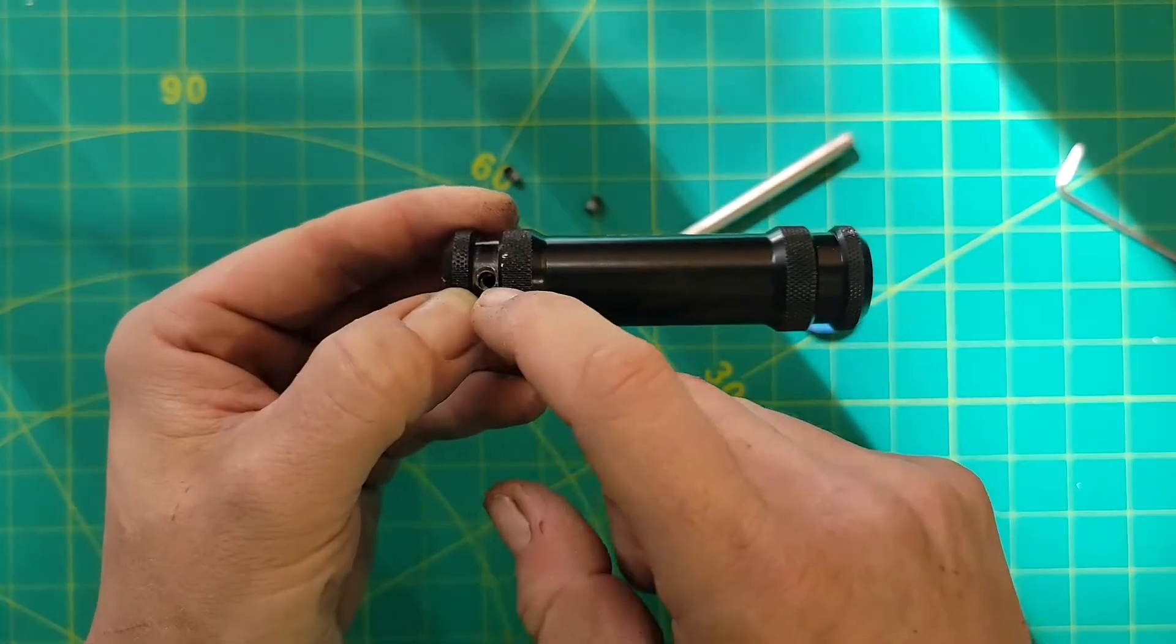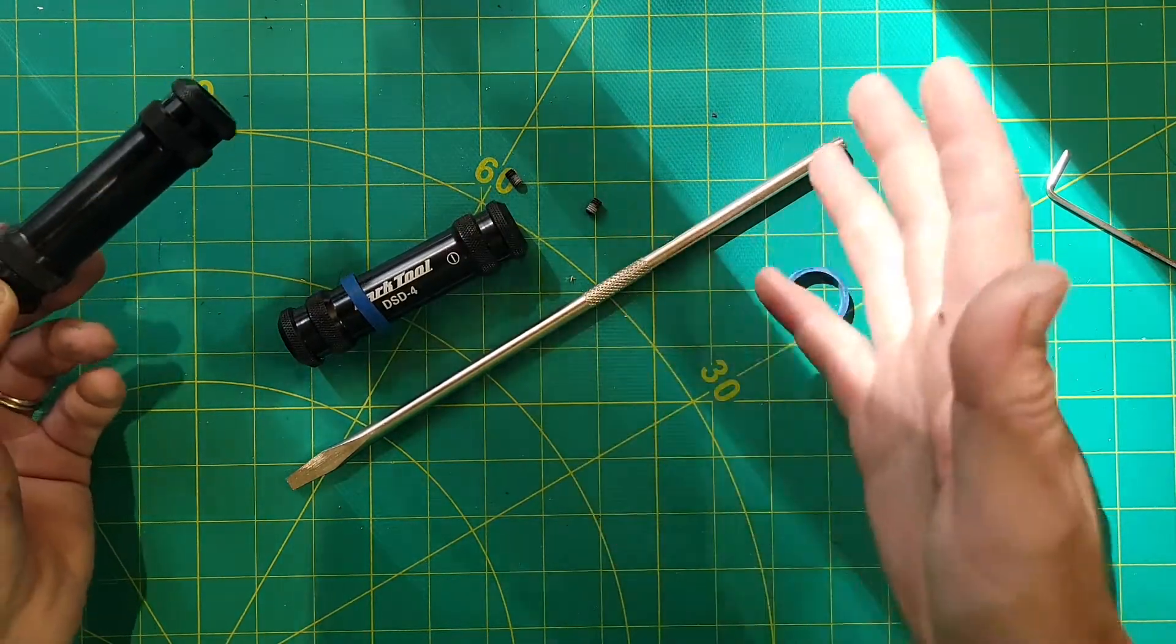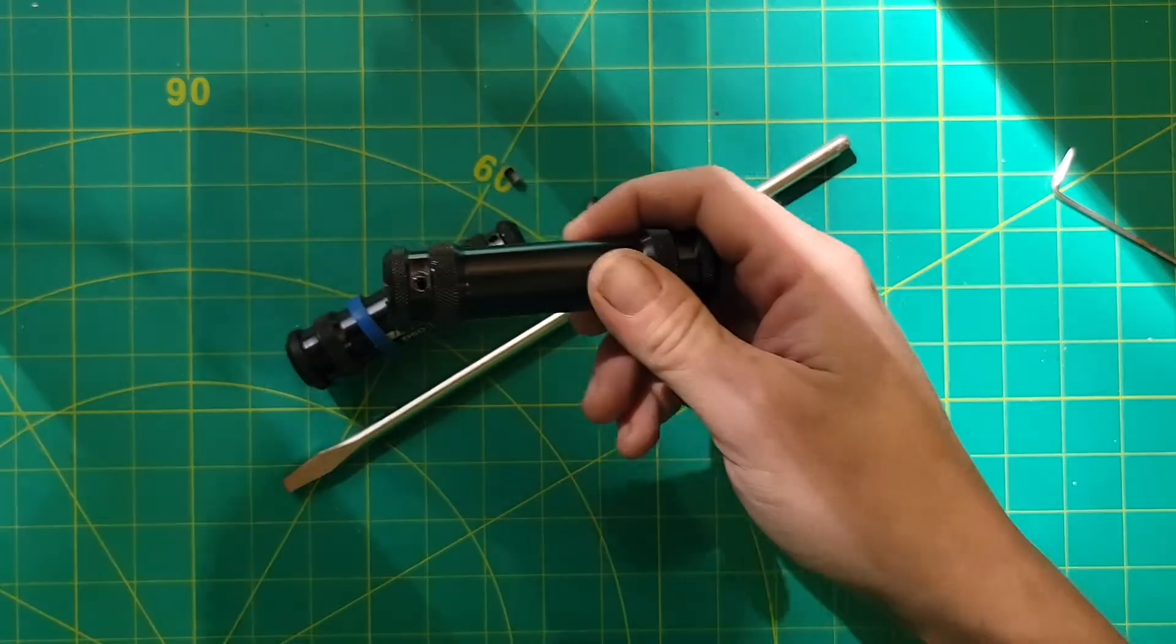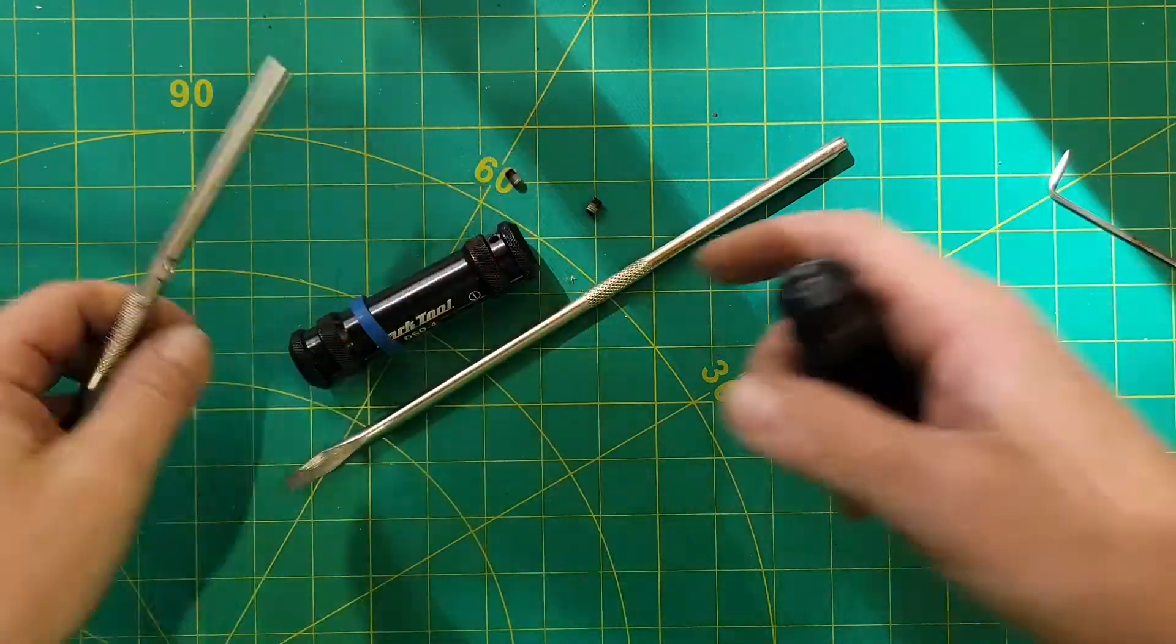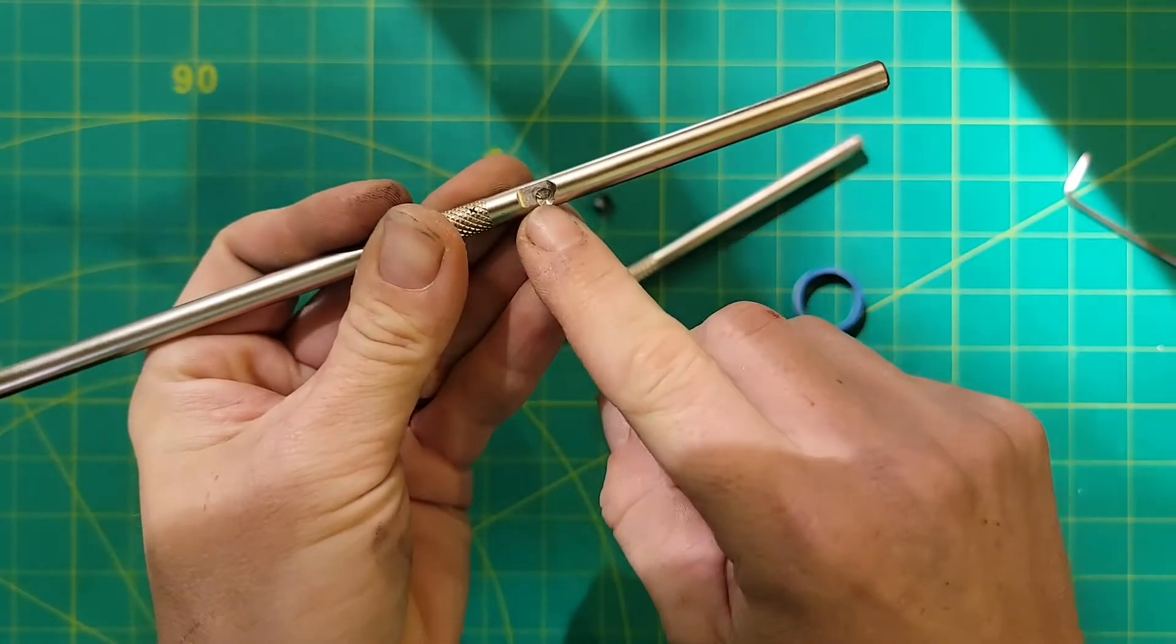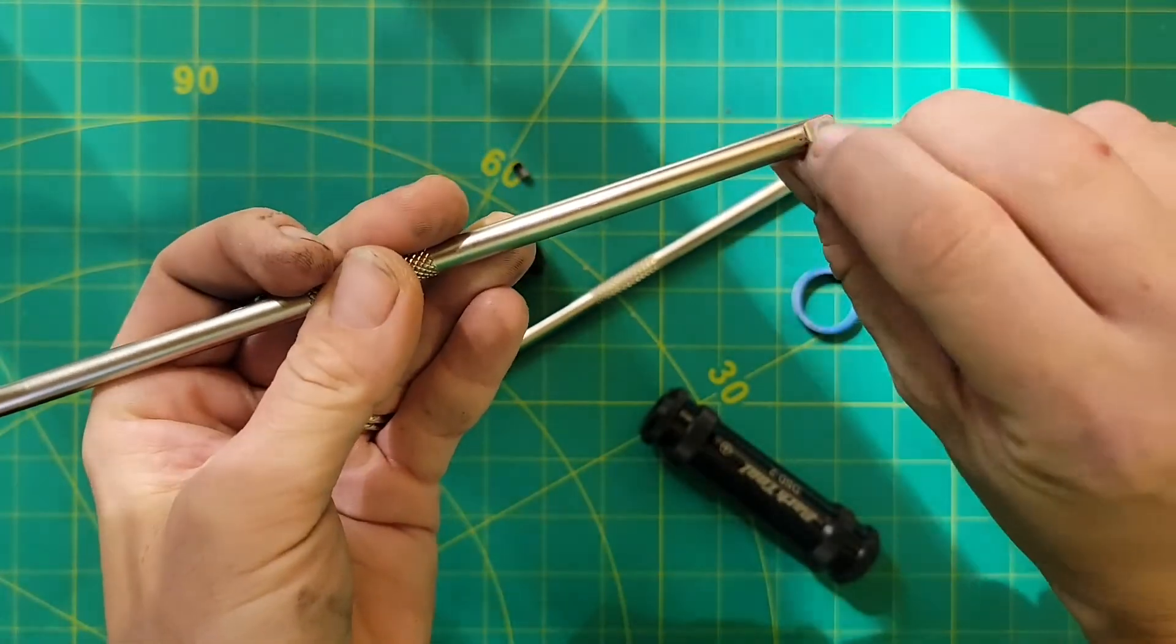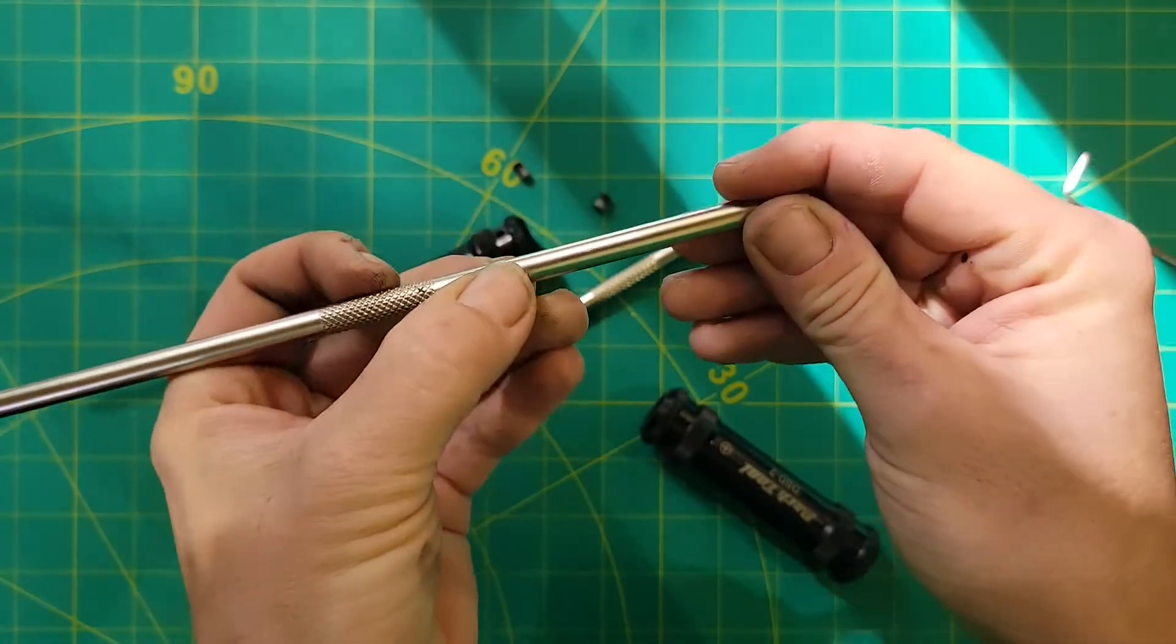In the future I might tap this but since I have this other flathead the DSD-4 that I just don't use, for now I'm just gonna take this handle off of here and use the actual screwdriver portion of the other one with this handle. So now what we're left with, besides this little nick that I made accidentally when I was taking that screw out, you can see that the shaft has two flats.